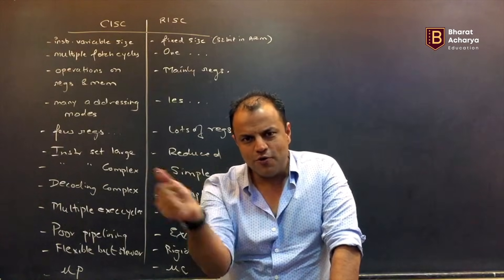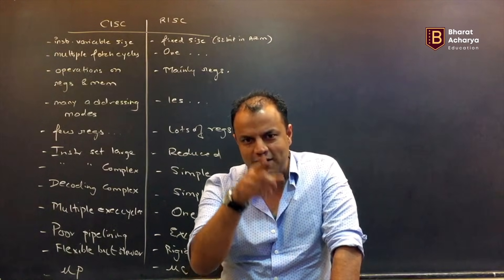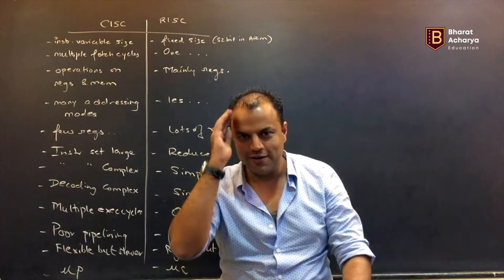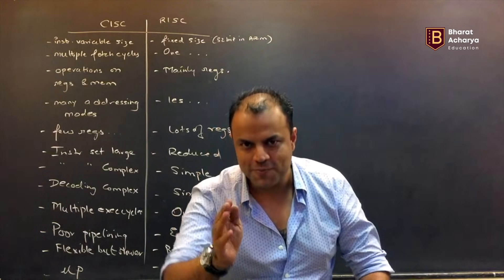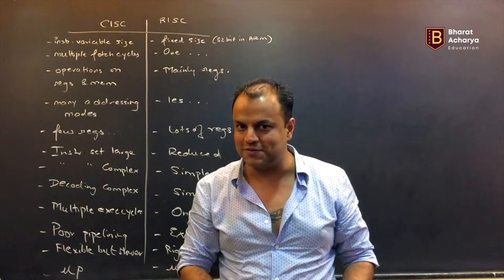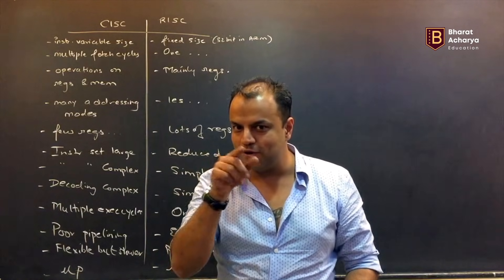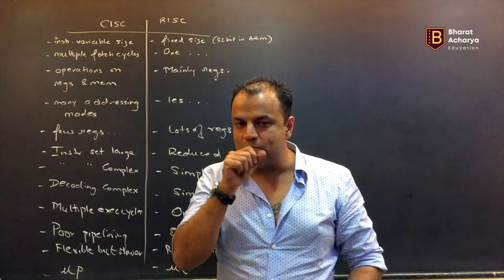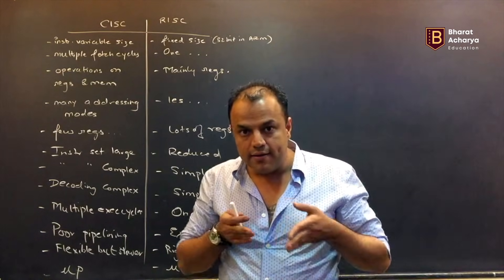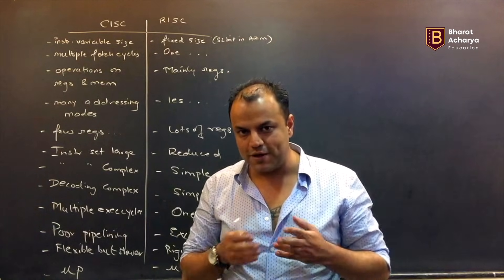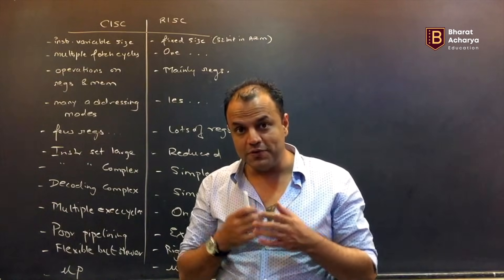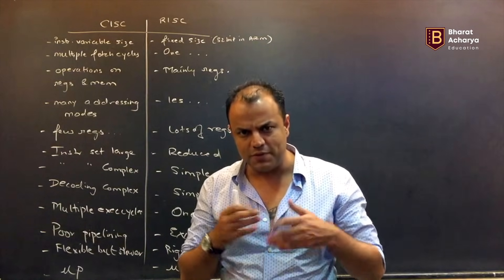So what is the advantage? All instructions will require one execution cycle — because you are working on registers. If you work on memory, an instruction will take more time because first you have to get the data, then perform the operation. But if you are working on registers, registers are present inside the processor, so obviously it will be faster.